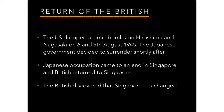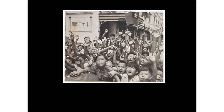The first big idea is the return of the British. The United States dropped atomic bombs on Hiroshima and Nagasaki on the 6th and 9th of August 1945. As a result, the Japanese government surrendered, ending the Japanese occupation in Singapore and allowing the British to return. Young people in Singapore were very happy the war was over, excited about the future, and hoping the British could fix the many problems left behind by the Japanese.